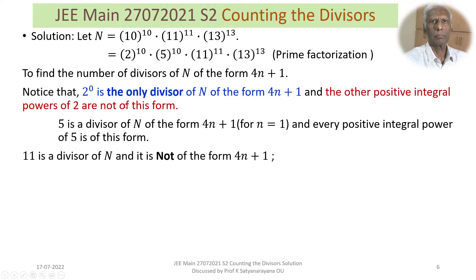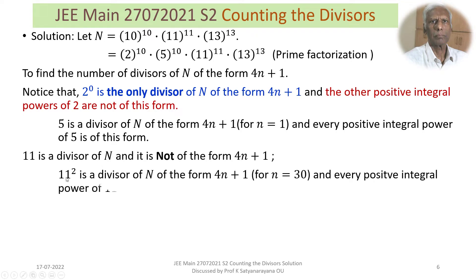11 is a divisor of N but it is not of the form 4N+1 — that is, 11 cannot be written as 4N+1 for any positive integer N. However, 11^2 = 121 is a divisor of N, and 121 is of the form 4N+1 because 121 = 4×30+1. Every positive integral even power of 11, such as 11^2, is also of the form 4N+1.